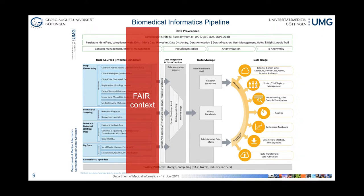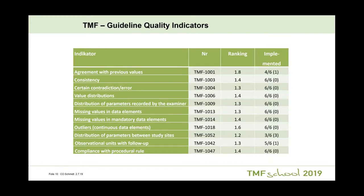Next is the FAIR context. The FAIR guiding principles are great. Last year we had Barend Mons in Geneva — senior author of the paper — and he was telling us: you have to read the paper, it's all about machine-readable data. But I think it's also very important for data to be human-understandable. He tells very simple things: data has to be findable, accessible, interoperable, and reusable. The TMF school in Germany has put together indicators of data quality — like value distributions, for example the age distribution.